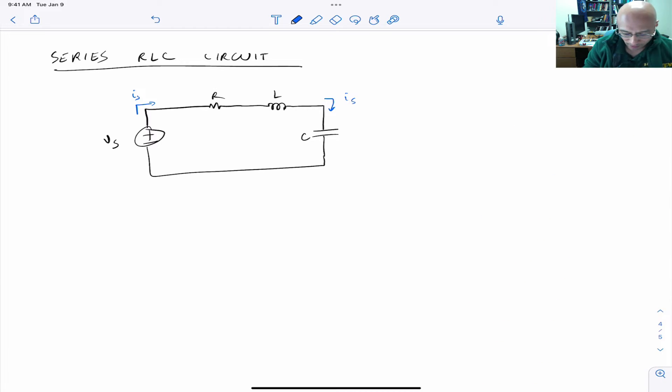One thing to note is that these elements are all in series. They're connected at one node between any two of them. There are no other current carrying connections at each connective node. So they all share the same current. We'll call that the source current IS.